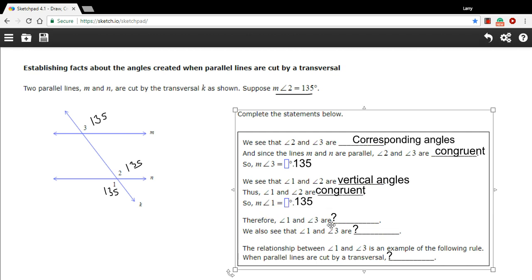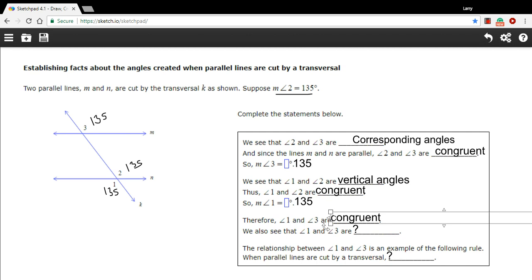Then it says, therefore, angle 1 and angle 3 are what? Well, if 1 and 2 are congruent and 2 and 3 are congruent, 1 and 3 are also congruent. So I think that's what they're looking for there. This is almost sounding like a proof.